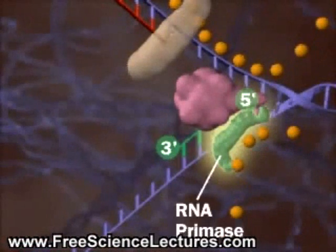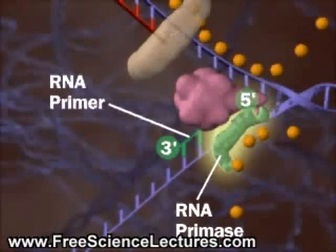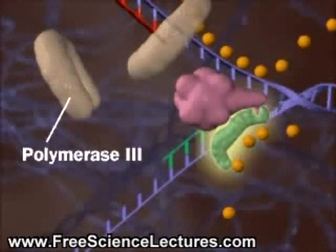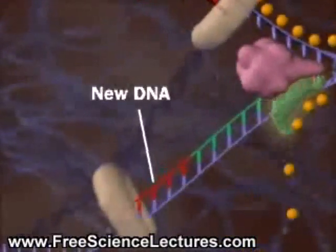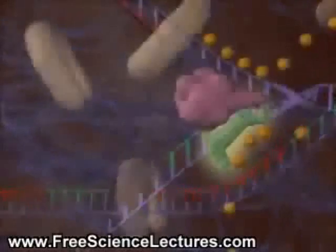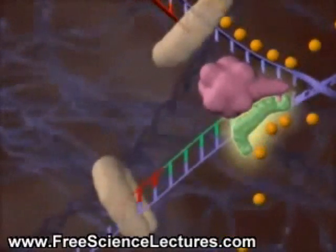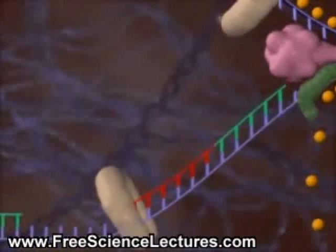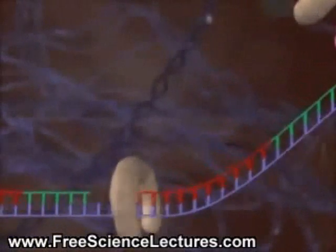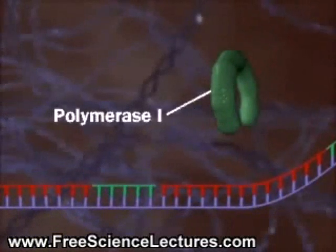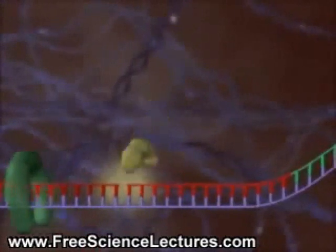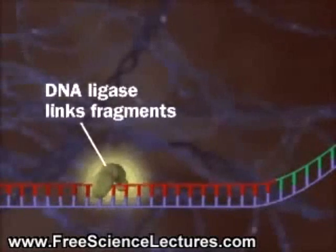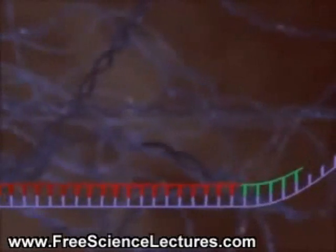First, an RNA primase lays down an RNA primer. Then, DNA polymerase 3 lays down new DNA. The process repeats again and again. DNA polymerase 1 replaces the RNA primers with DNA. Finally, DNA ligase links the Okazaki fragments.